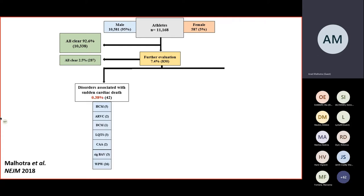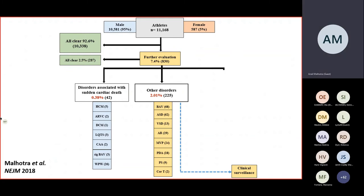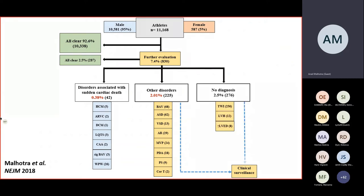42 individuals — 0.38% — were diagnosed with some form of cardiomyopathy, structural disease, or electrical problem associated with sudden cardiac death. Because an echocardiogram was also performed, 2% of individuals had a minor structural or valvular issue requiring ongoing surveillance. There was also a cohort with abnormal repolarization changes such as T-wave inversion in the context of a structurally normal heart, or those with borderline changes where no diagnostic criteria were met.